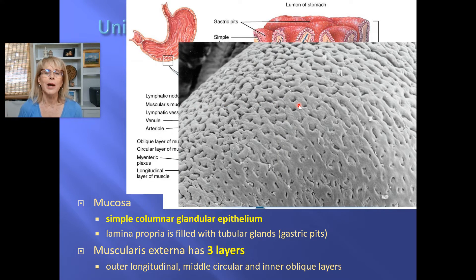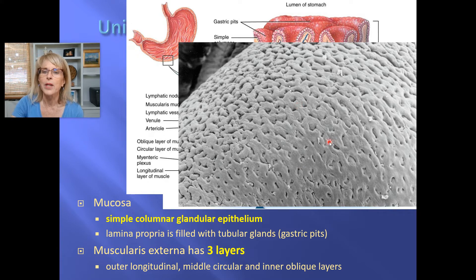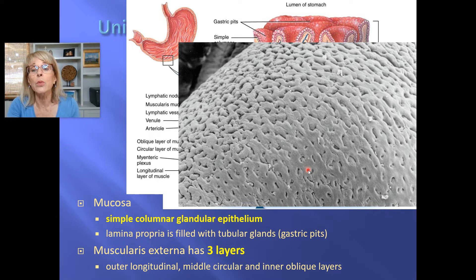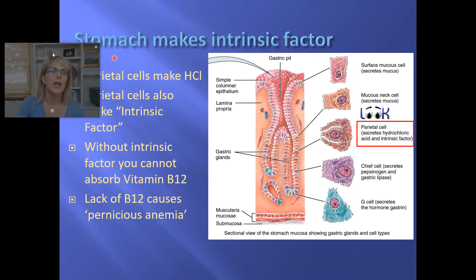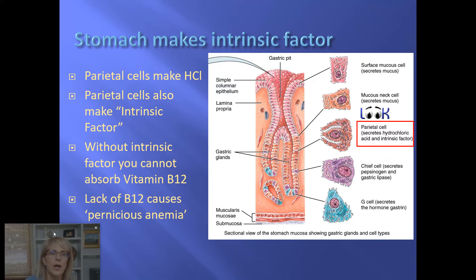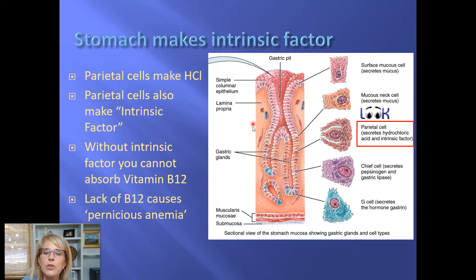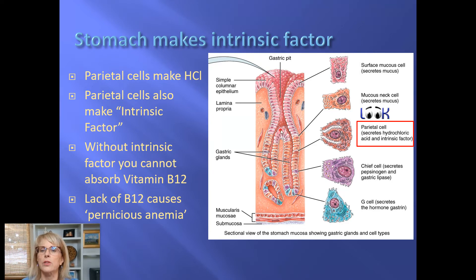If you were to surf microscopically over the surface of the stomach, this is what it would look like — this is a scanning electron micrograph, so we're really zoomed in. You can see these are not finger-like projections sticking up at you; you are looking down at a series of wells. And if you were microscopically down there, coming out of those little wells would be hydrochloric acid and a very powerful protease known as pepsin.